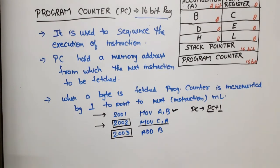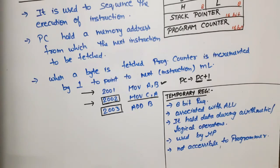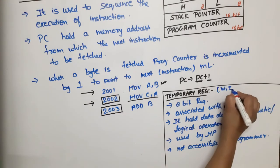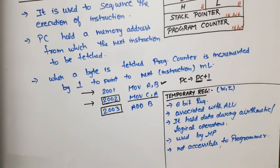Besides these registers, there are temporary registers. When we are discussing registers, we have two temporary registers in the 8085 microprocessor: W and Z. As the name suggests, this is a temporary register, which means whatever data is stored is not permanent. It will be stored temporarily.